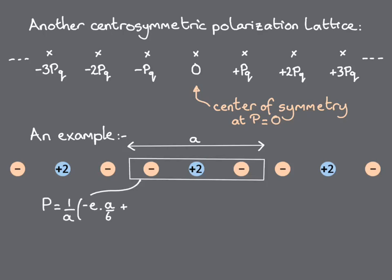For consistency, let's call the unit cell length a again and work out the polarization of some representative unit cells. For this unit cell, the polarization is proportional to -e × (1/6)a + 2e × (1/2)a - e × (5/6)a, which is zero.